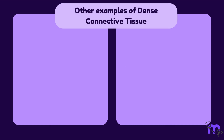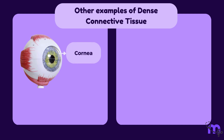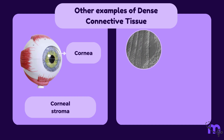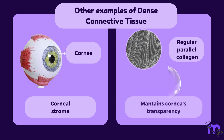The cornea is the clear outermost layer of the eye that covers the iris and pupil. It is made up of specialised dense connective tissue called corneal stroma. The collagen fibres are arranged in a regular, parallel manner, which helps to maintain the cornea's transparency.